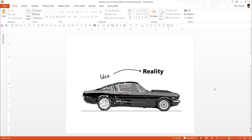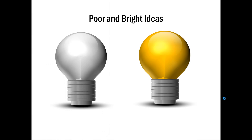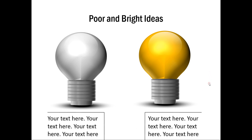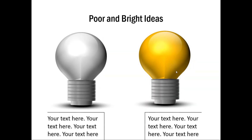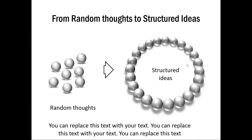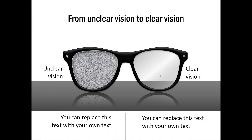Let me show you some example templates taken from our PowerPoint CEO packs, where we show the idea of transformation in very interesting ways. This example from CEO Pack 2 shows poor and bright ideas — grayscale on one side and color on the other. Here we show the transformation from random thoughts to structured ideas, and also unclear vision to clear vision.